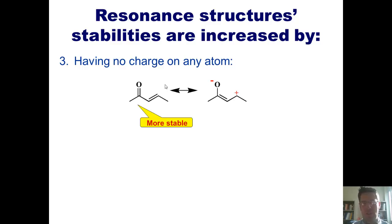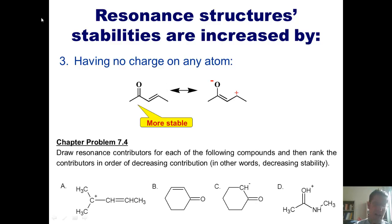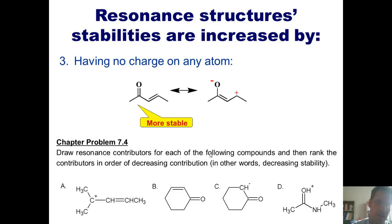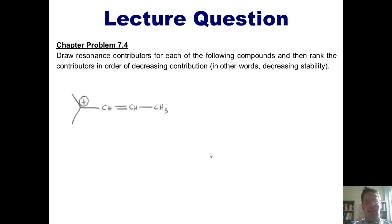Let's see if we have a mastery of this concept by looking at a chapter problem. Draw resonance contributors for each of the following compounds and then rank the contributors in order of decreasing contribution — in other words, decreasing stability. Here's the first one. Let's see if we can draw resonance contributors. There is a positive charge on a carbon, which means that carbon only has six electrons around it.